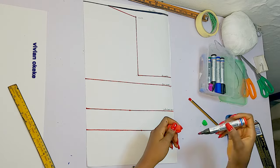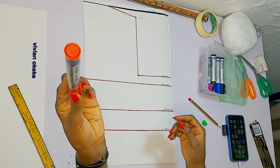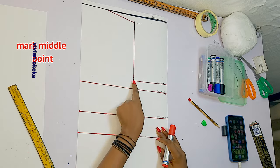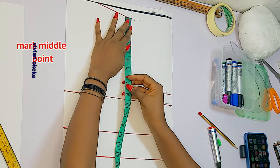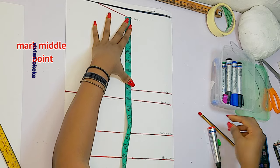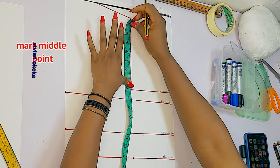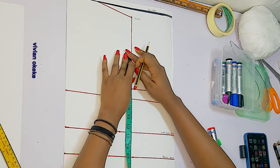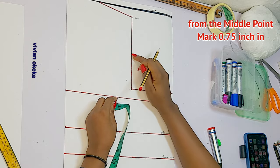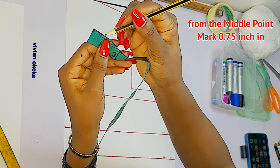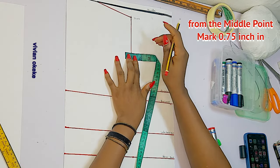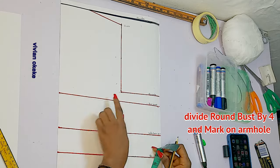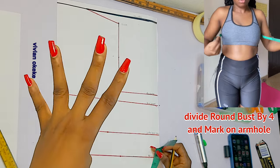I went ahead to thicken the lines with my marker since I've confirmed the measurements are correct. The next step is to mark the middle point on the armhole to create the curve. I'll place my tape from the slope down to the armhole point and fold it in half to find the middle. Then I'm marking 0.75 inch inward from that middle point.